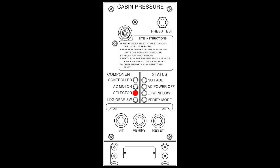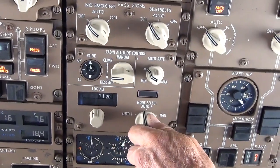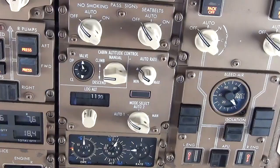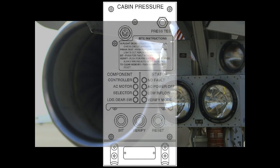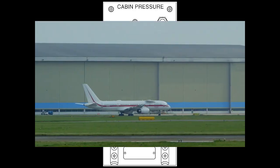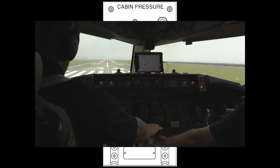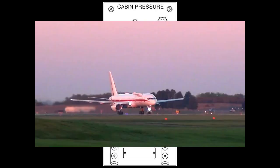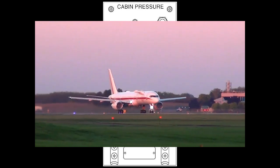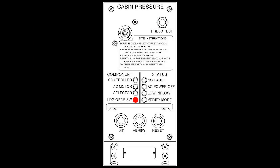Selector: this indicates a problem with the selector panel on the flight deck, not the CPC. Note, there are conditions where this fault can be stored when the pilot selects the offside CPC during a power transition. Landing gear switch: this indicates a problem with the aircraft landing gear switch circuit, not the CPC.